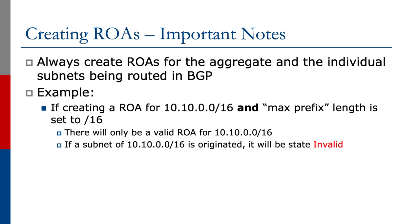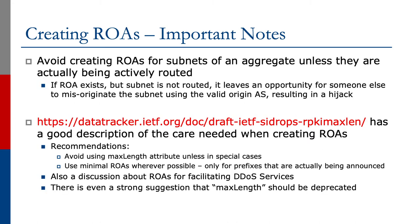No more and no less. For example, if creating a ROA for 10.10/16 and max prefix length is set to /16, the only valid ROA will be for 10.10/16. If a subnet of 10.10/16 is originated, it will be of state invalid. Avoid creating ROAs for subnets of an aggregate unless they're actually being actively routed. If a ROA exists but a subnet is not routed, it leaves an opportunity for someone else to misoriginate the subnet using the valid origin AS, resulting in a hijack.